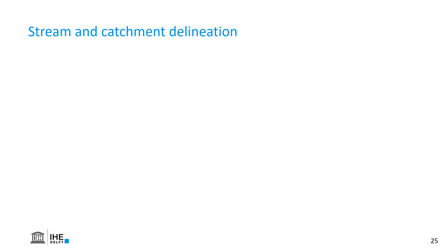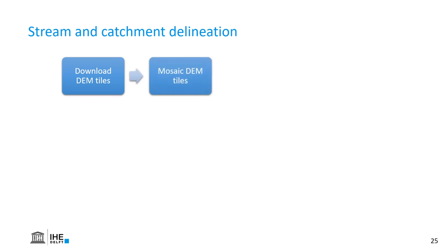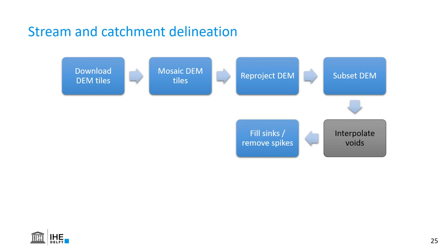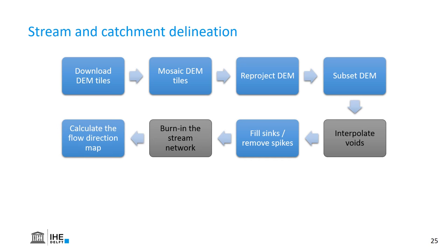So you've just learned the general procedure for catchment and stream delineation, which consists of downloading the DEM tiles, mosaicking the tiles if your study area is spread over multiple tiles, then reprojecting the DEM, subsetting the DEM, interpolating the voids if necessary, filling the sinks and removing the spikes, burning the stream network if necessary and if you have one available, and calculating the flow direction map.